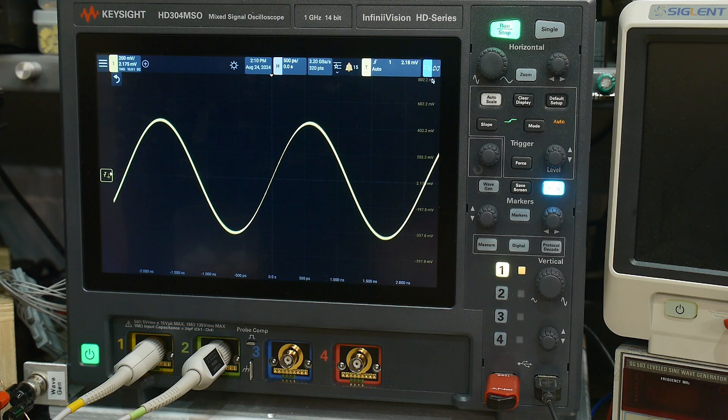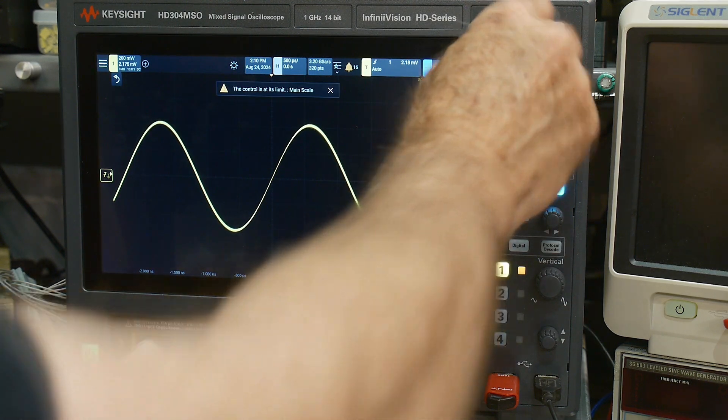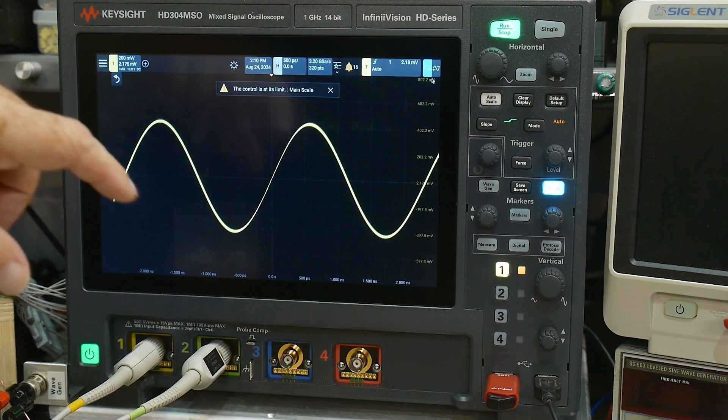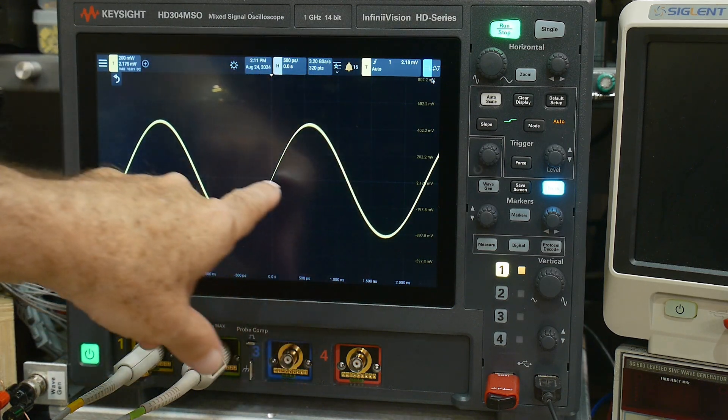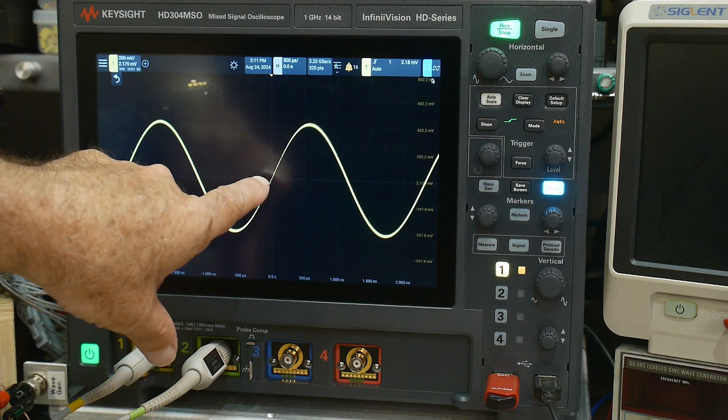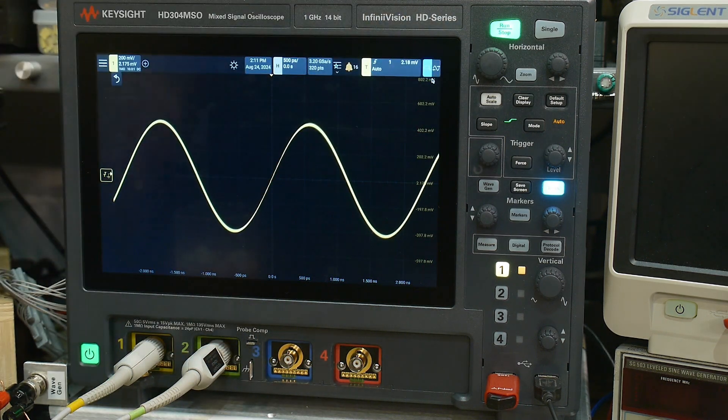We get a sine wave and we really can't zoom in any farther because I'm at 500 picoseconds per division already. This is 433 megahertz, but we're interested in that jitter there. You can see that we have a thin line here, but we have a thick line here. So there's obviously some phase jitter here.